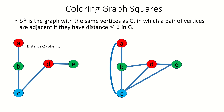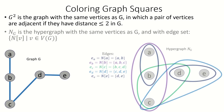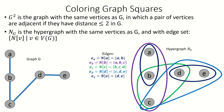Connecting this to hypergraph strong colorings, from a graph G we can form the closed neighborhood hypergraph of G, N sub G.